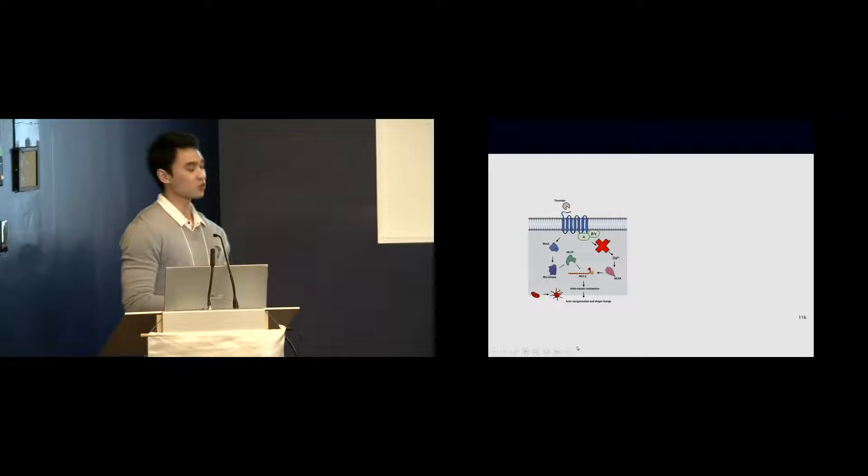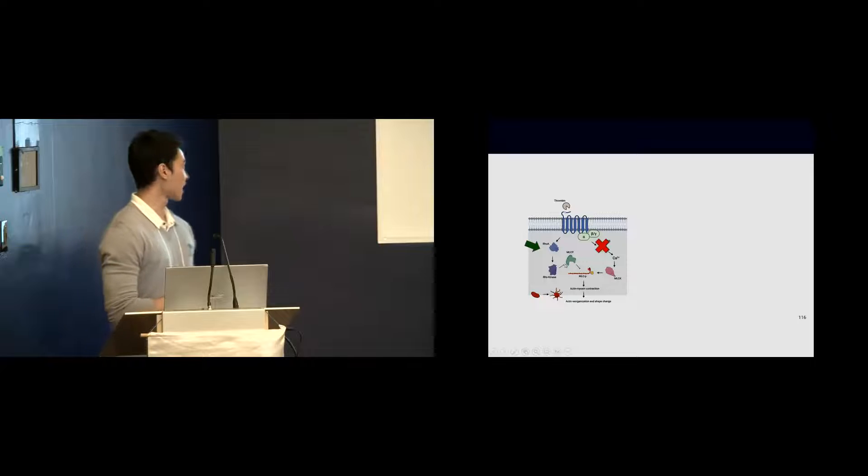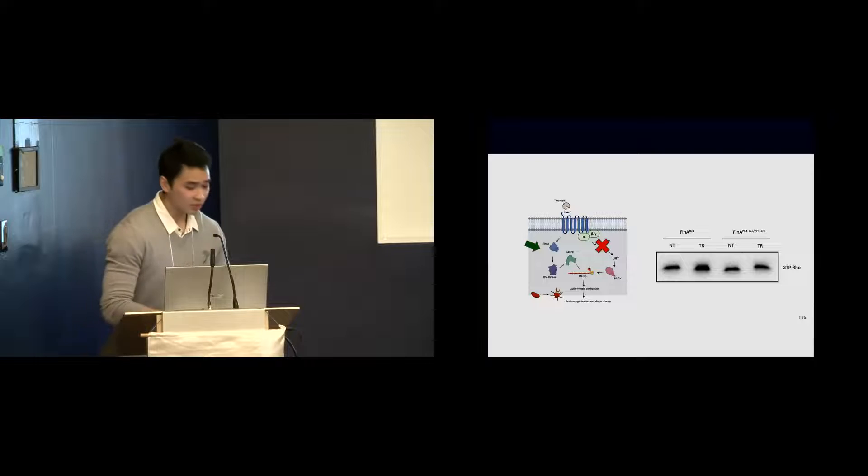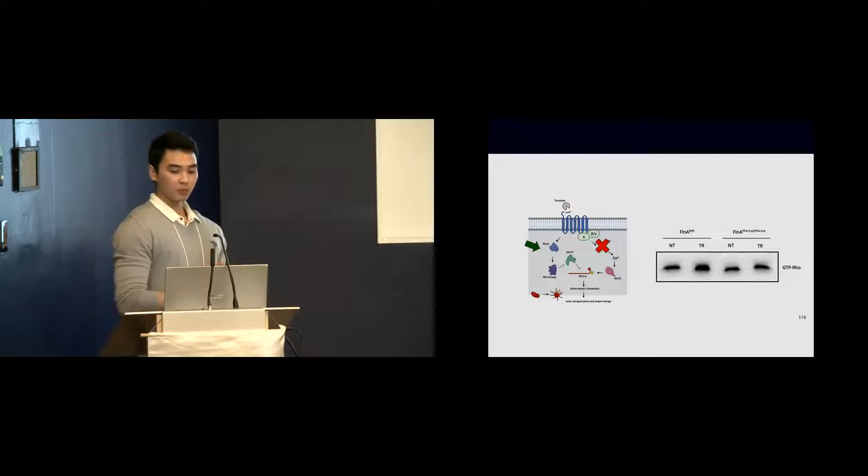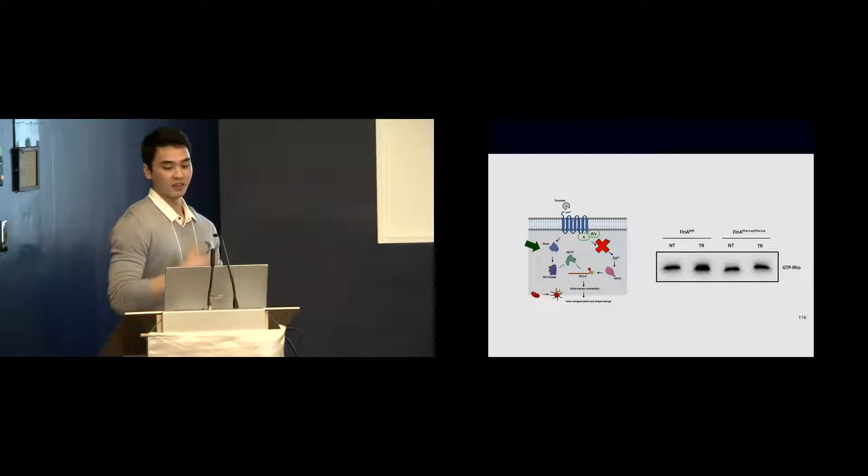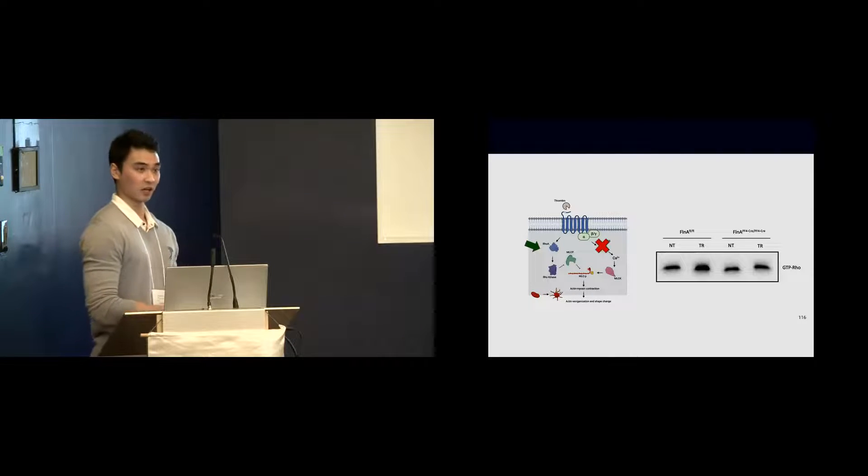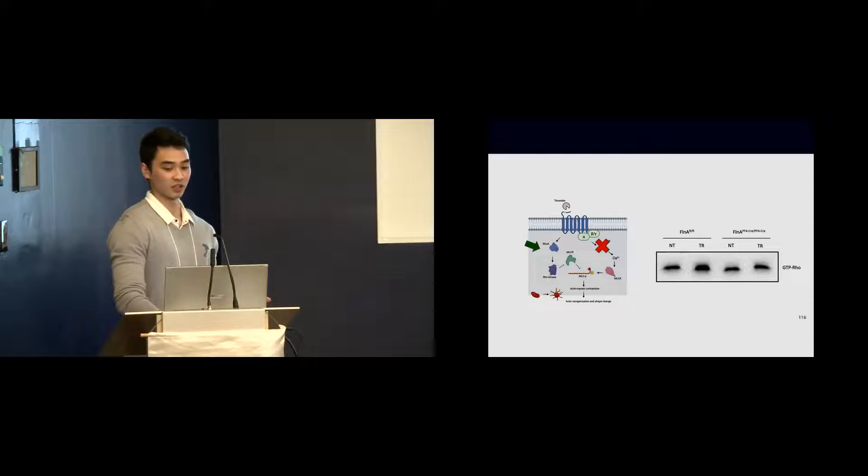To further support that filament A is regulating this pathway, the next protein that I started to look at is actually RhoA. As you might remember, RhoA is a GTPase. So by conducting an active RhoA pulldown, I was able to evaluate the amount of active RhoA in both the knockout and the controls. My preliminary data show that indeed, in the absence of filament A, RhoA activity is significantly lower than the controls, indicating that filament A indeed plays a role in this regulatory pathway.